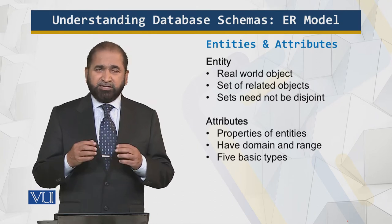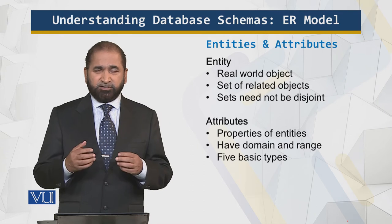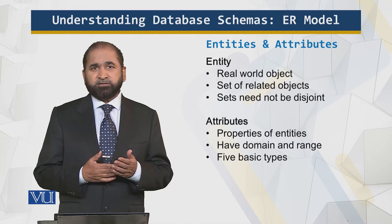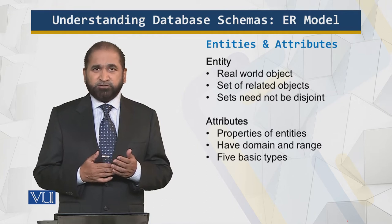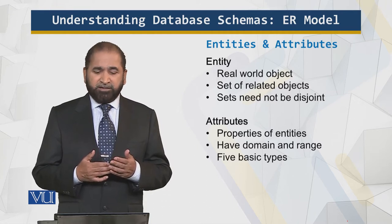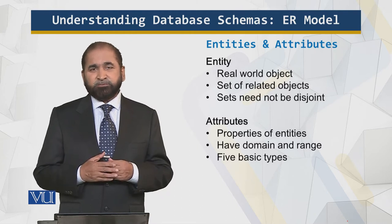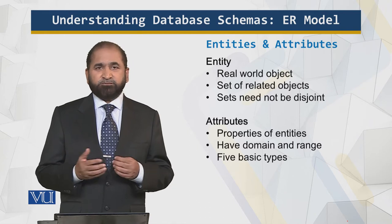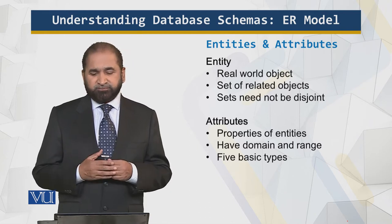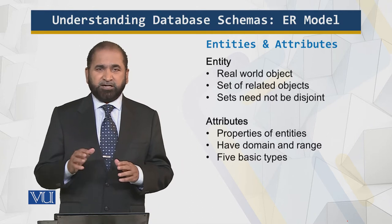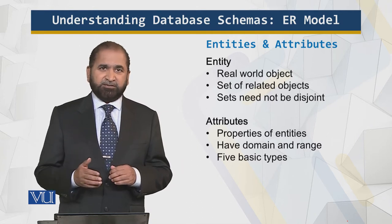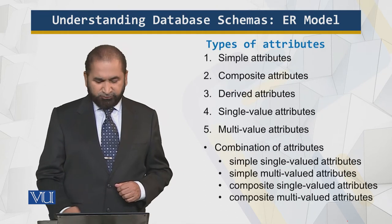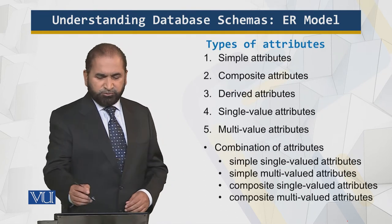These entities, which are real-world things, have attributes. They have the name of the student, the address of the student, the father's name — and these have domain and range. For example, a name cannot be a number, age cannot be negative, and a phone number cannot be negative. There are five basic types of attributes, which I will go into in the next slide.